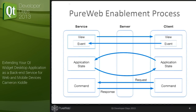A bit more about what the PureWeb enablement process involves — how you actually take your application and make it accessible. The first step is setting up connections between the client and the service, which is boilerplate code you put inside the client and service. Then you select which views from your application — which is now the service — you want to promote and make available on the client side. It could be one view or multiple views, each rendered and handled separately. You copy those images into the PureWeb imaging pipeline, which distributes them to your clients.